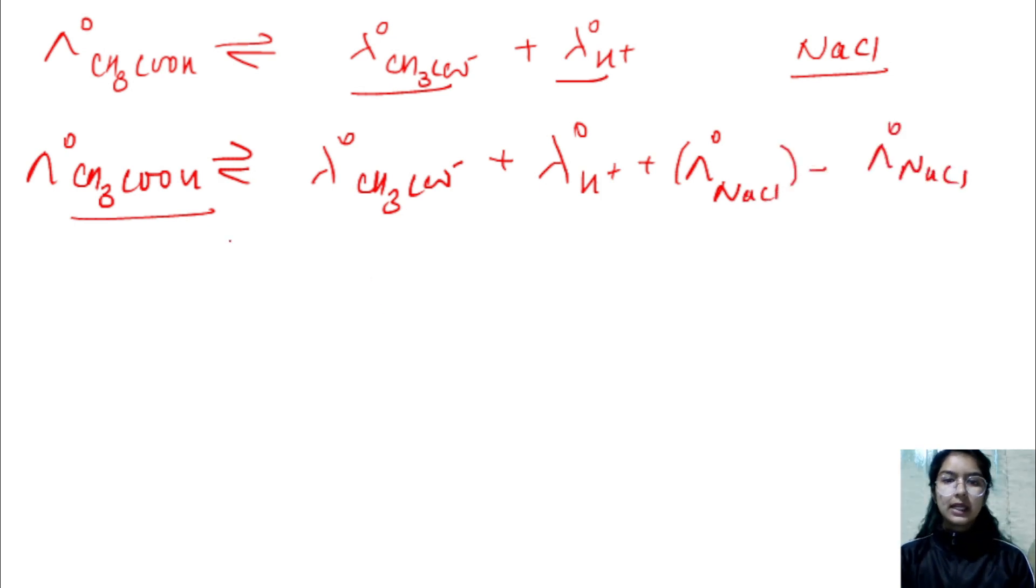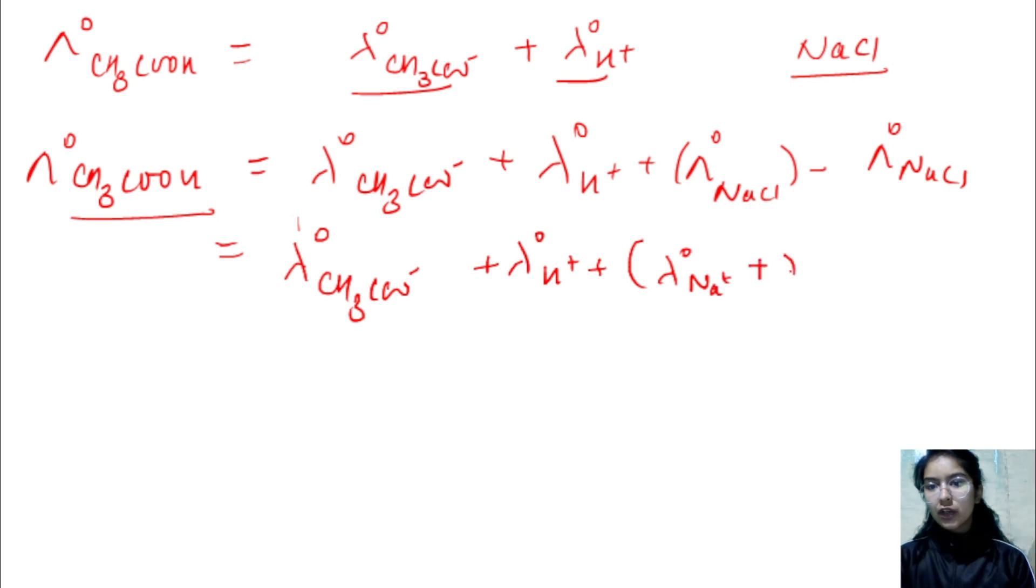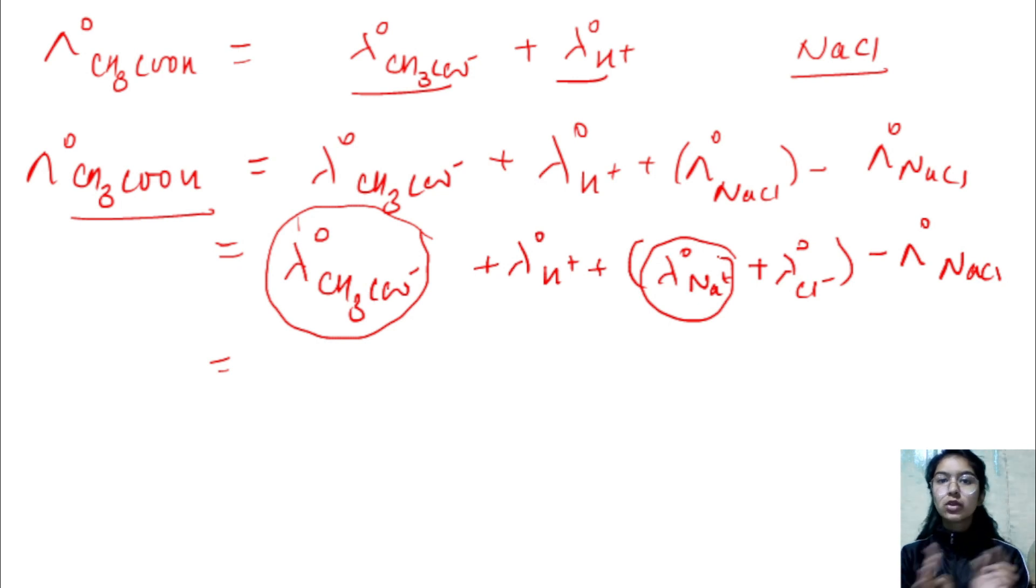So I add NaCl. If I add NaCl to it, what do I need to do? When I calculate this value, lambda naught this plus this, I can write lambda naught Na plus and lambda naught Cl minus. I can write this value as it is, because it is already a strong electrolyte.